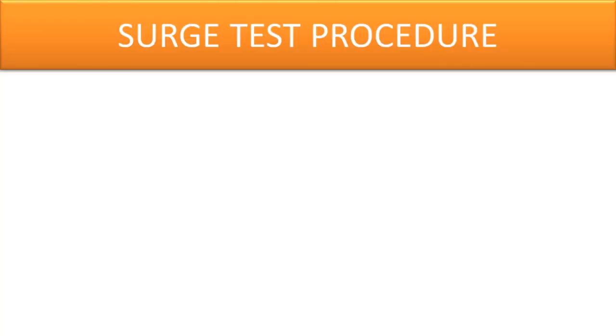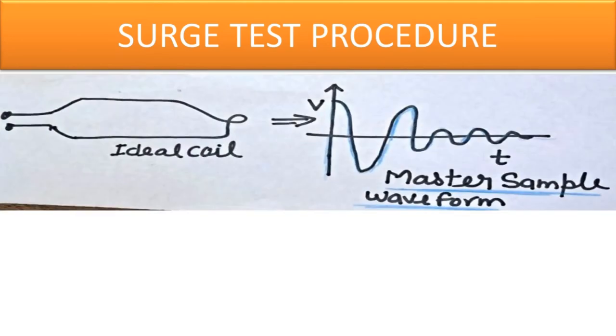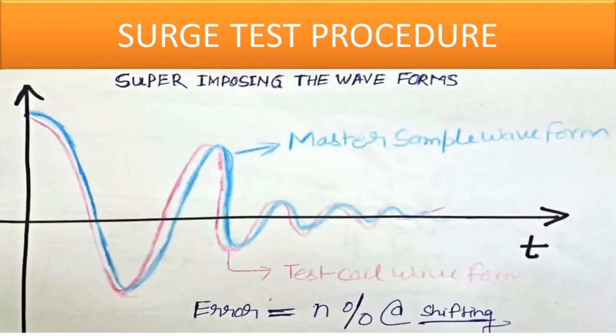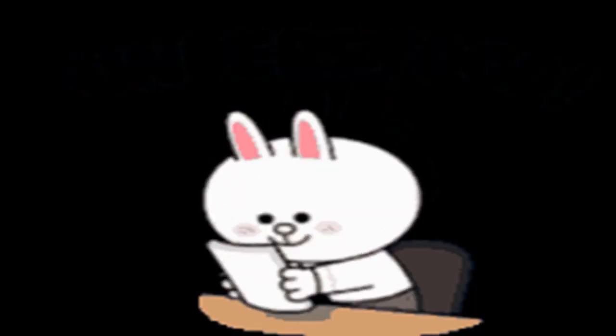Now, we shall know the procedure of the surge test. When we test a coil, first we make a master sample waveform by choosing the ideal coil and save it on database. Then, we shall compare the waveform which is generated from the test coil and we analyze both waveforms by superimposing each other and record percentage of the shifting as error. Similarly, we shall test the windings which are engaged in stator, rotors, and transformer. I hope you will understand the surge test of the coil and windings.